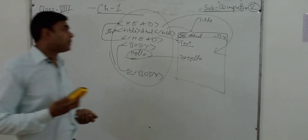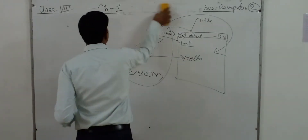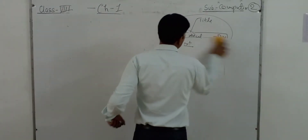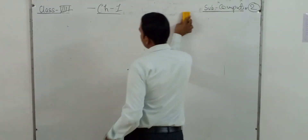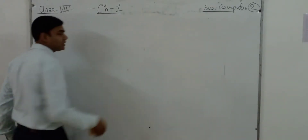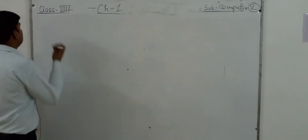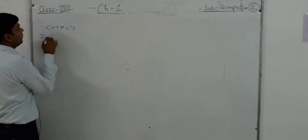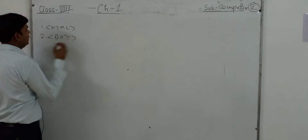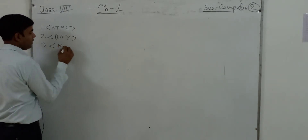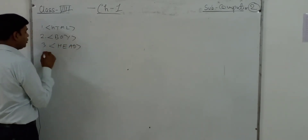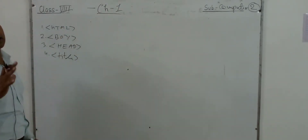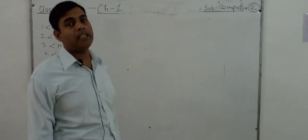So we have four main tags. First is the HTML tag, second is the body tag, third is the head tag, and fourth is the title tag. These four are container tags. Container tags have both an opening tag and a closing tag.